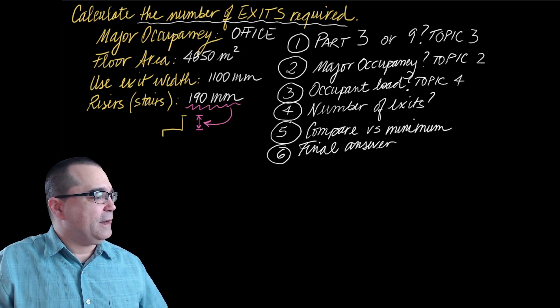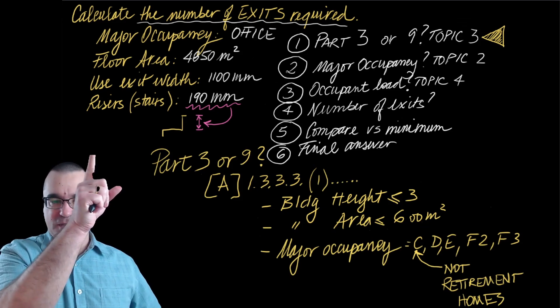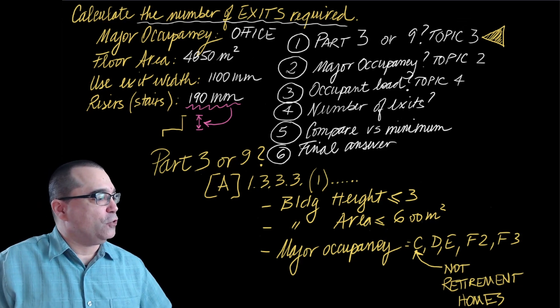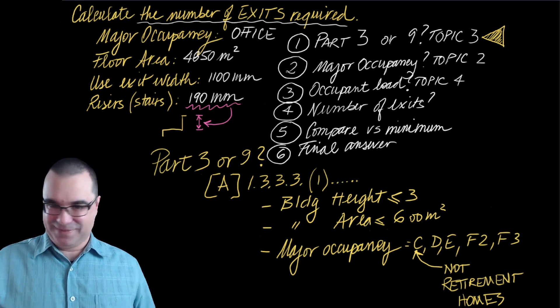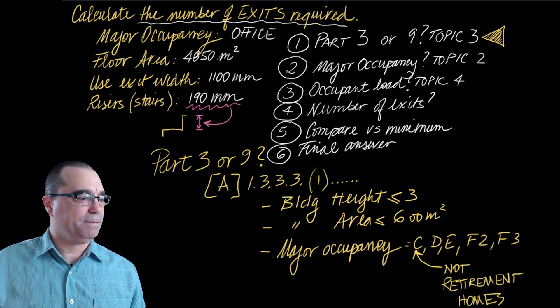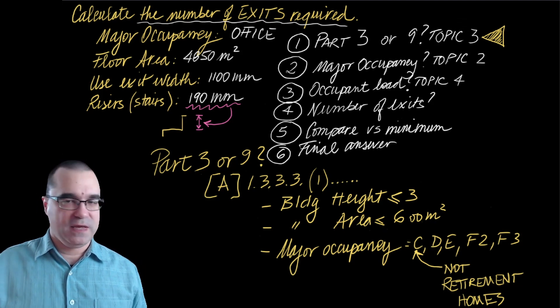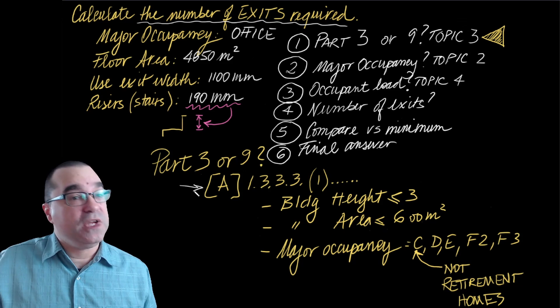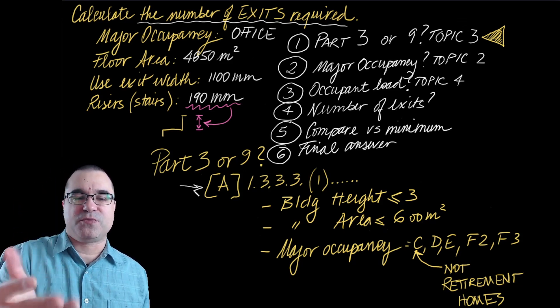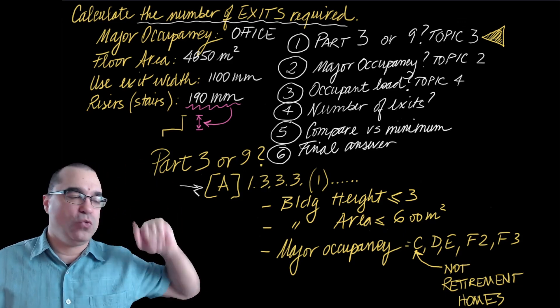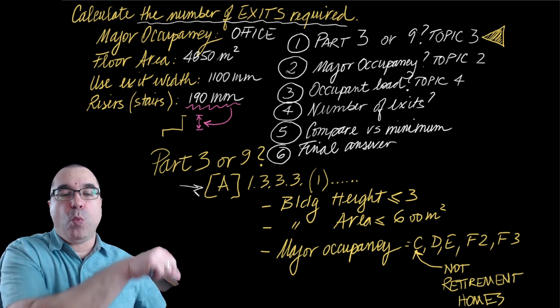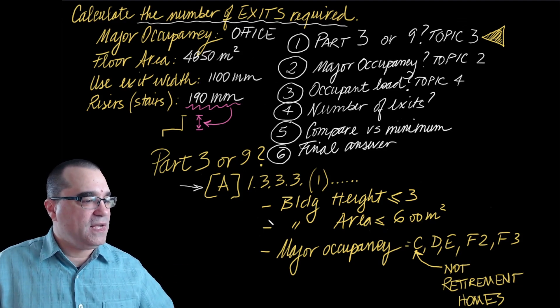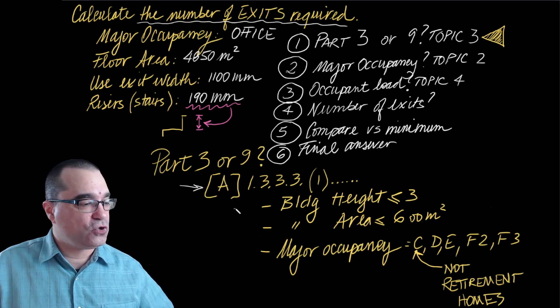Let's start with step number one, which is determining whether or not this building, or at least the floor area that we're identifying, is covered under part three or part nine of the Ontario building code, because that tells us then where to find all relevant information to solve this question. To figure out whether a building is part three or part nine, the best way that I recommend doing this is to use the requirement under sentence 1.3.3.1. That's 1.3.3.3.1, which gives you three conditions to identify a part nine building. If even one of these three conditions fails, automatically, not a part nine, it's a part three building.